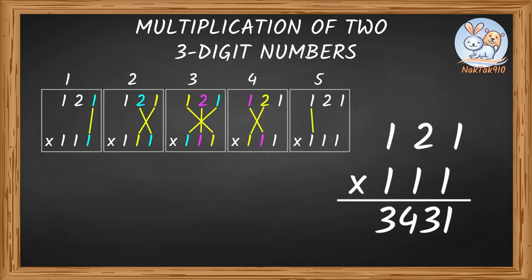Step 5. Now multiply 1 times 1. 1 times 1 equals 1. Now write this 1 to the left of 3. So, our final answer is 13,431.